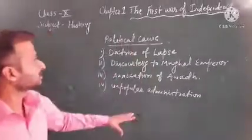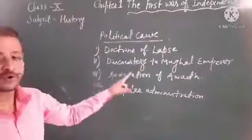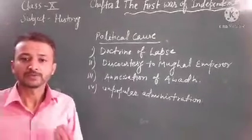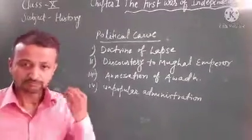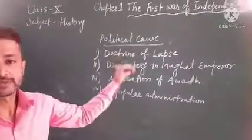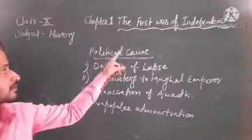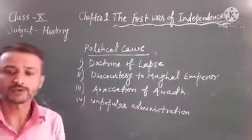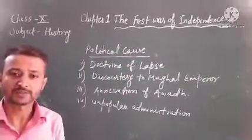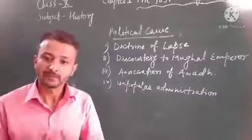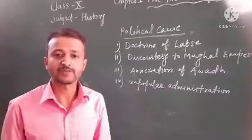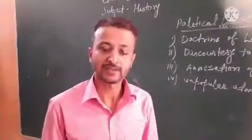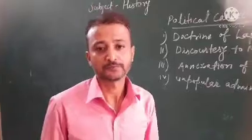So we have completed all the political causes that became one of the factors for the First War of Independence in 1857. The remaining causes we will discuss in the next classes. Till then, goodbye. Thank you.